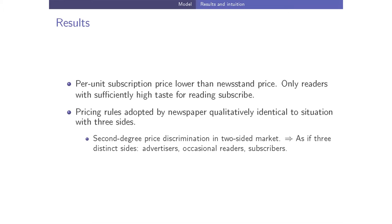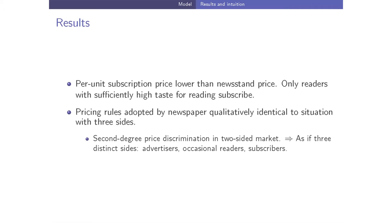Theoretically, we show that the per-unit subscription price is lower than the newsstand price because only readers with sufficiently high taste for reading subscribe, so there is price discrimination even absent the advertising side. The pricing rules adopted by newspapers are qualitatively identical to a three-sided situation: the price charged to occasional buyers affects the price to advertisers, and the price to occasional buyers affects the number of subscribers and vice versa. Advertisers do affect the extent of second-degree price discrimination, and newspapers shift toward more subscribers following the shock.